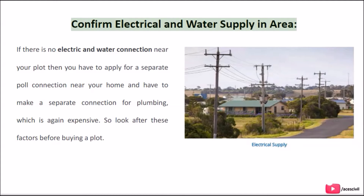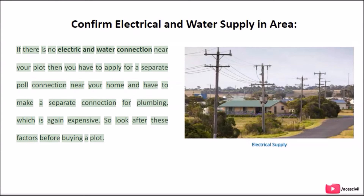The third tip is to confirm electrical and water supply in the area. If there is no electric and water connection near your plot, you will have to apply for a separate pole connection near your home and make a separate connection for plumbing, which is again expensive. So look after these factors before buying a plot.